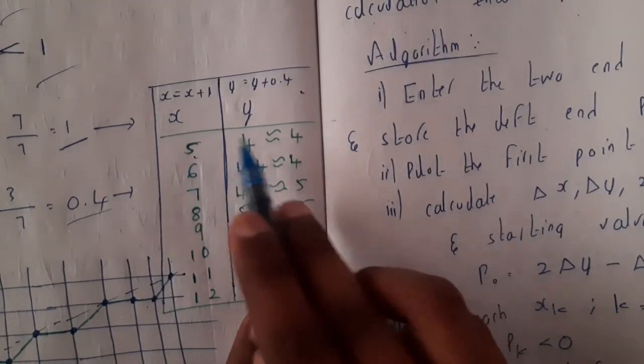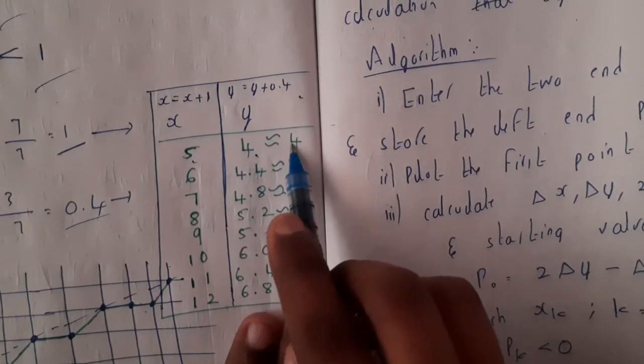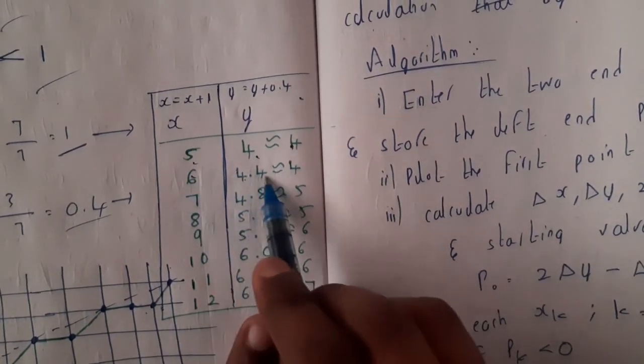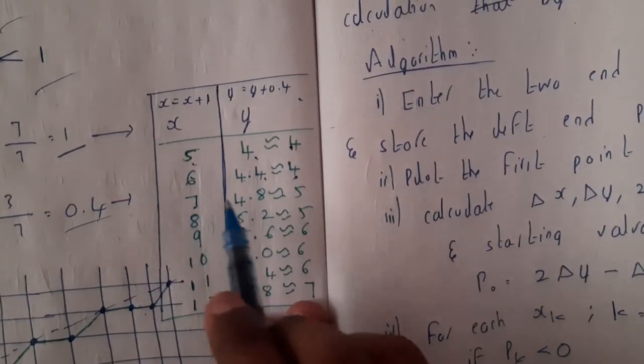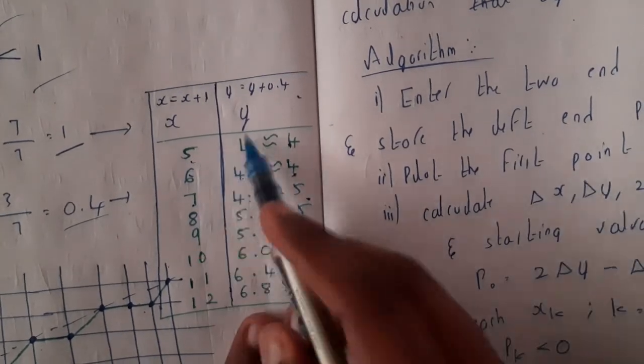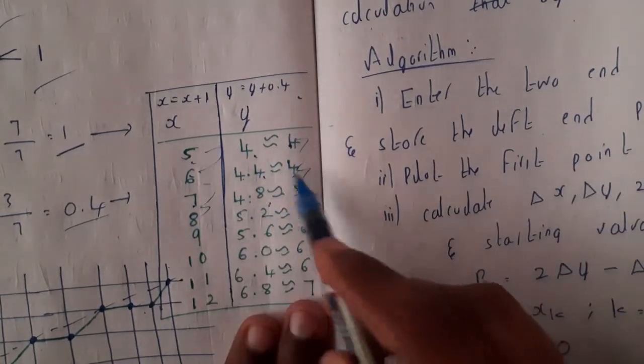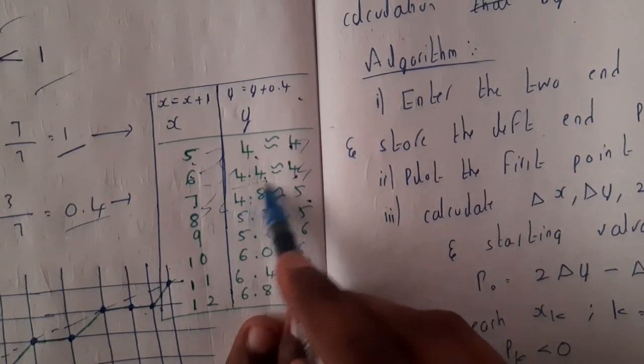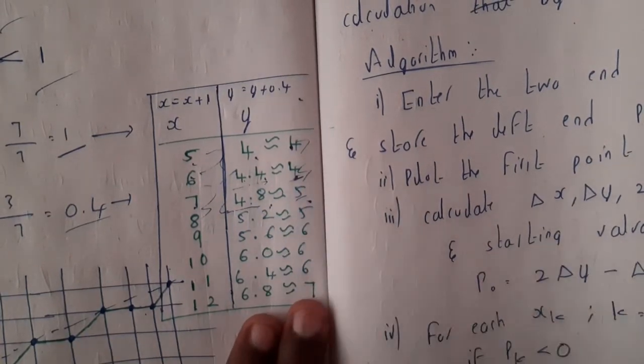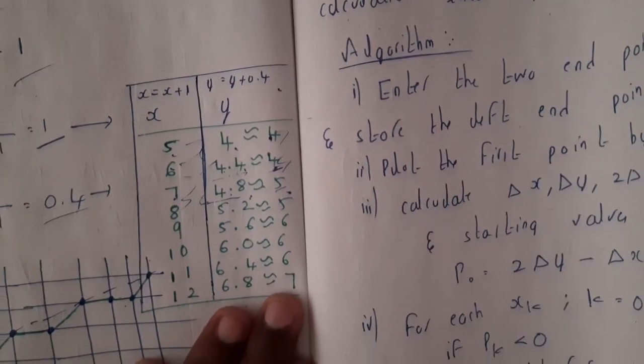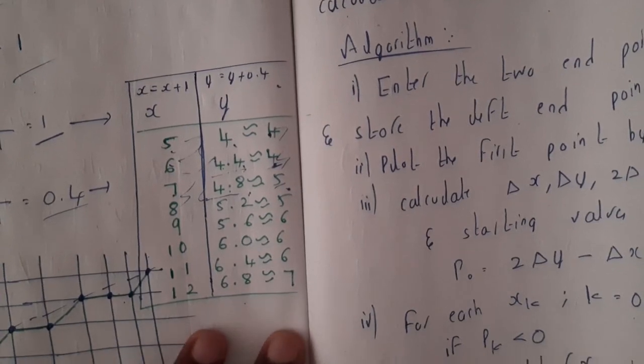Here we got 5, here we got 4, we'll be approximating it to 4. So 6, 4.4 we'll be approximating it to 4. 7, 4.8 to 5. So indirectly we are incrementing 1 and here we are incrementing 0.4 but we are doing it like round or something. You'll be making it as a normal integer.